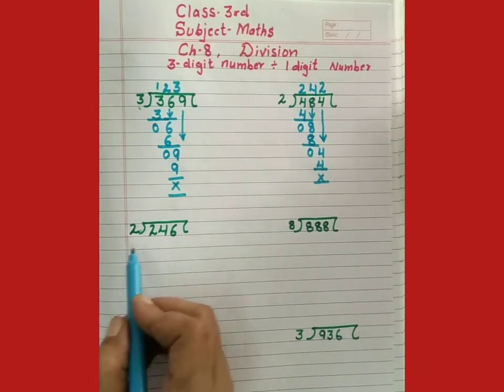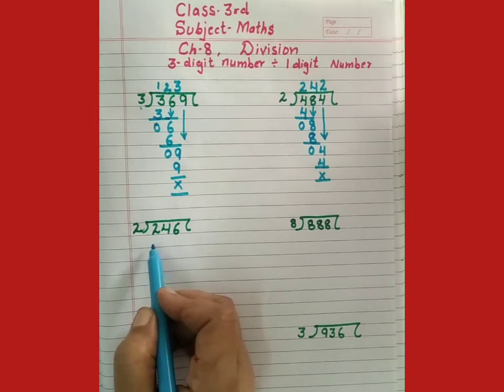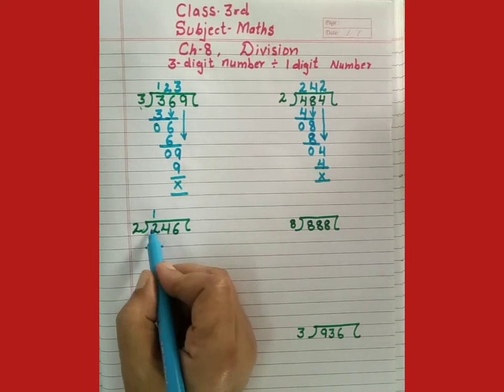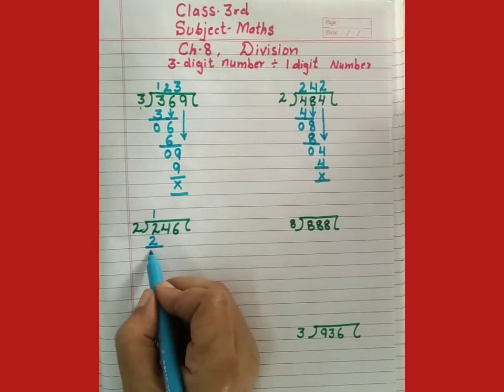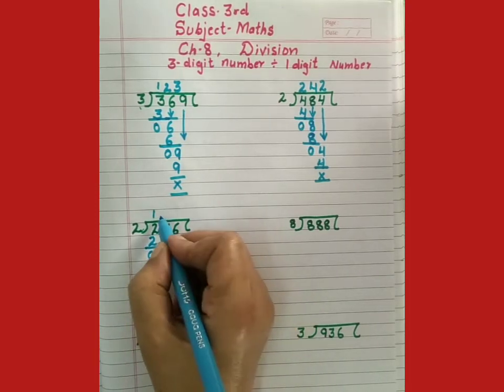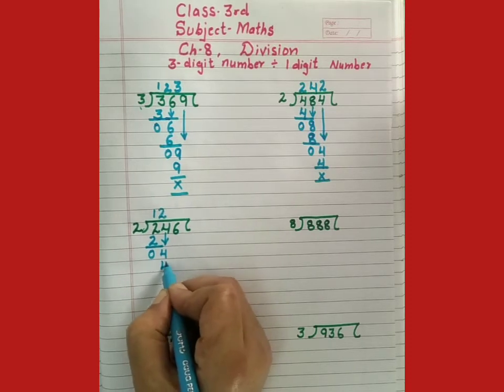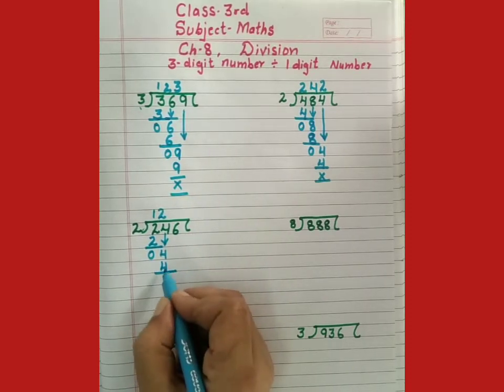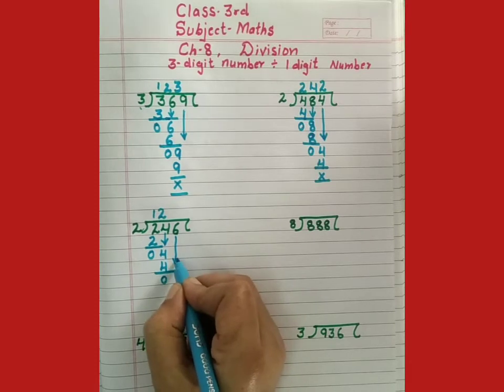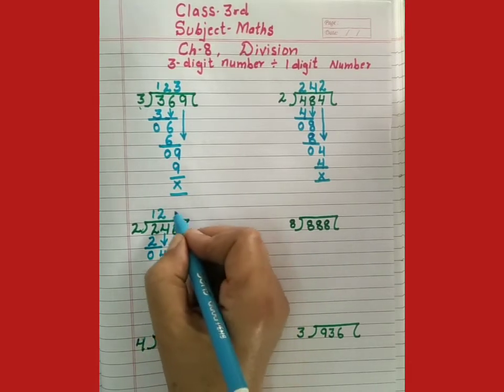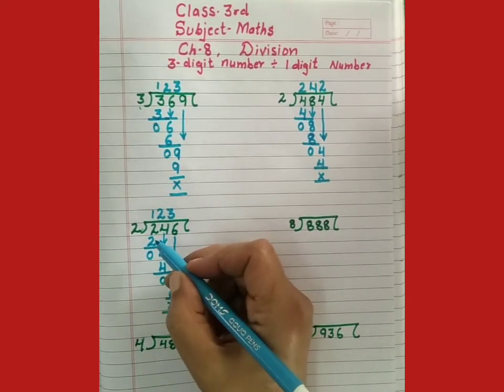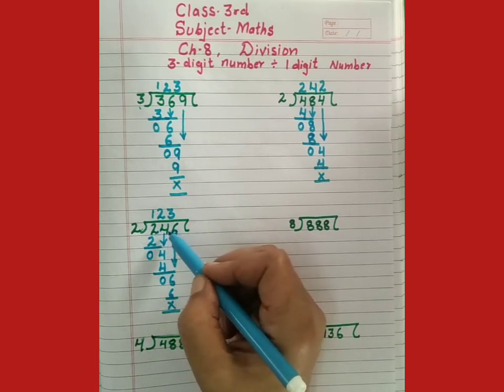In next sum, we have to divide 246 by 2. 2 ones are 2. 2 minus 2, 0. Now, we will bring down 4. 2 ke table me 4 ka baad hai. 2 twos are 4. Now we will bring down 6. 2 threes are 6. So, students, is me hum step wise divide karte hai.